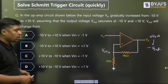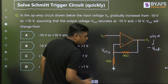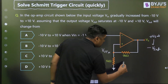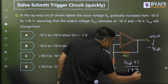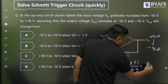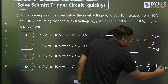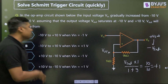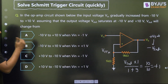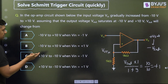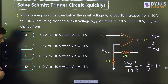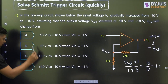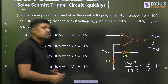So what is the threshold? VR is 0, so what is the upper threshold? It is V-sat multiplied by 1 divided by 1 plus 9, because VR is 0. V-sat is 10 divided by 10, which equals plus 1. When the input increases from minus 10 to plus 10 and crosses plus 1 volt, the output switches from plus 10 to minus 10. So the output switches when V-in reaches 1 volt — that is the answer.